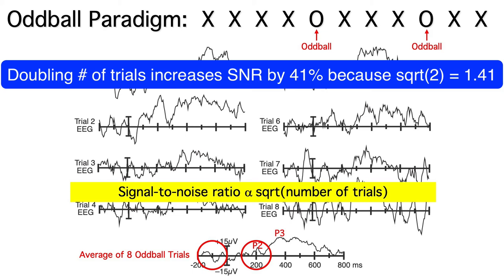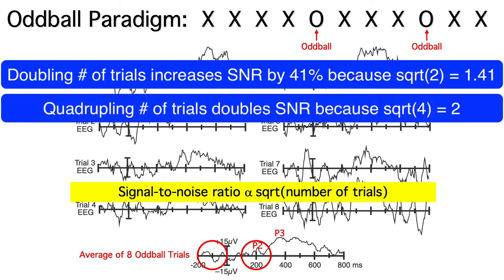We'd need to quadruple the number of trials to double the signal-to-noise ratio, because the square root of 4 is 2. So we'd need 32 trials to double the SNR that we get with 8 trials.